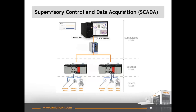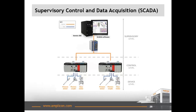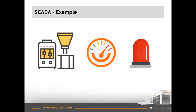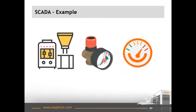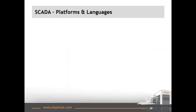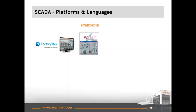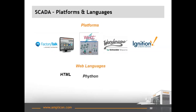Through the use of sensors and measuring devices, SCADA systems can detect abnormal parameters or alarms and automatically respond with a program control function. For example, if an alarm occurred signaling too much pressure in a line, the SCADA system would trigger a program response to open a pressure relief valve to return pressure levels to a normal value. Some of the most popular SCADA platforms currently used are FactoryTalk, WinCC, Wonderware and Ignition. Each of these platforms can be programmed with modern web languages such as HTML, Python or PHP, and are easily integrated with database software such as SQL.